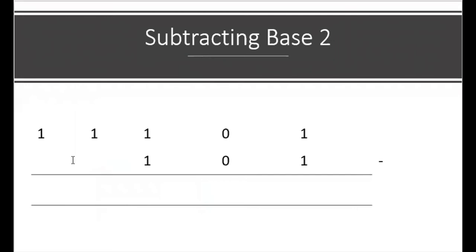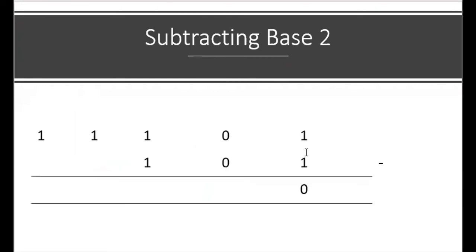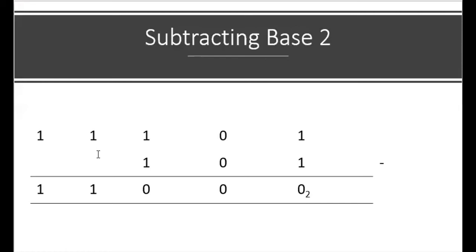Now we're looking at subtracting base 2 digits. For 11101 minus 101: 1 minus 1 is 0, 0 minus 0 is 0, 1 minus 1 is 0, then there's a 1 with nothing to subtract from it, and another 1 with nothing to subtract from it. So our answer is 11000 in base 2.